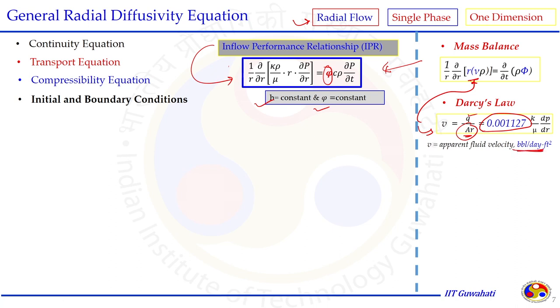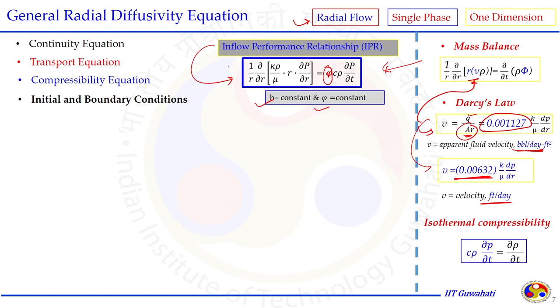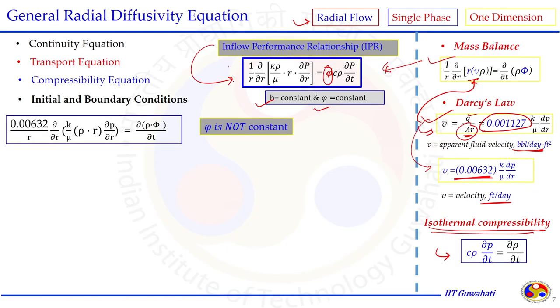When writing the equation in terms of velocity, u·A_r where A_r is the area, some numerical values come into picture because of units. If velocity is in barrels per day per ft², the numerical value will be 0.00632. The only difference between the two forms is the way the unit of velocity or apparent fluid velocity is considered in the expression. Including Darcy law in a different unit form, we get a different form of the IPR equation, and we also include isothermal compressibility to account for fluid properties.